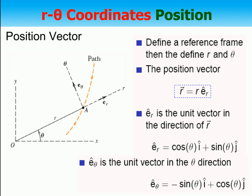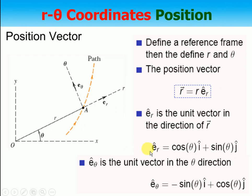Taking the body at a particular instant, to show the position in r-theta coordinates we give r, and the direction of the vector. So er is the unit vector in the direction of r. The er vector in terms of i and j components of x and y coordinates is: er = cos θ · i + sin θ · j. This is the cos component and the sin component of the i and j components of the radial unit vector.